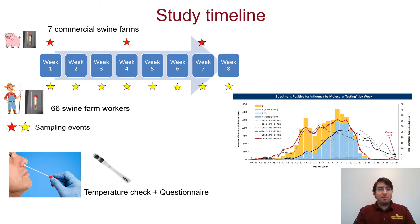On the human side, we also took a temperature check in the morning when workers entered the farm, and they answered a questionnaire. We asked things like: do you have any influenza-like symptoms? Do you have fever? Do you feel okay? This was to identify risk factors for testing influenza-positive.